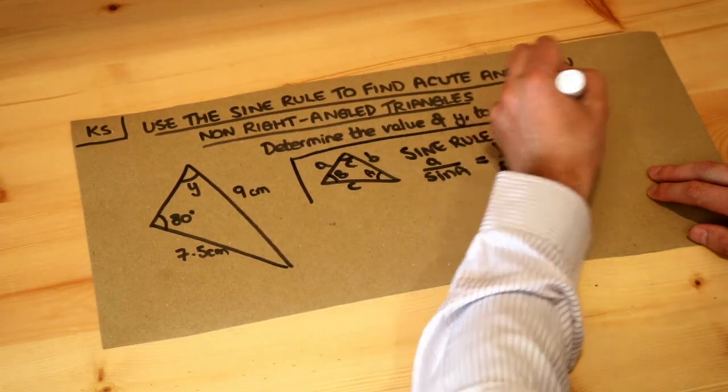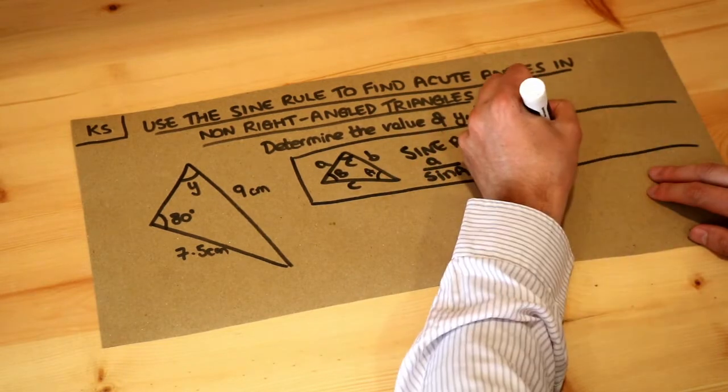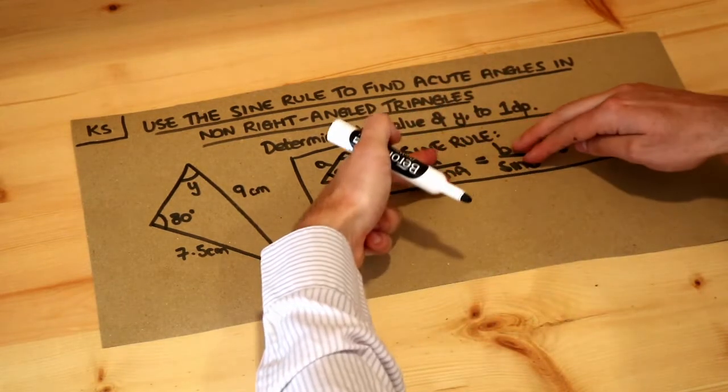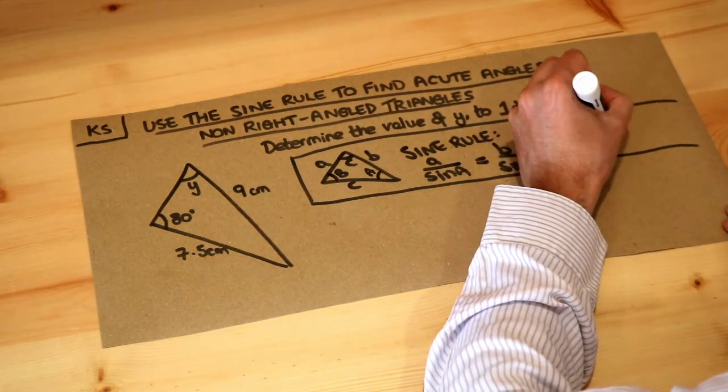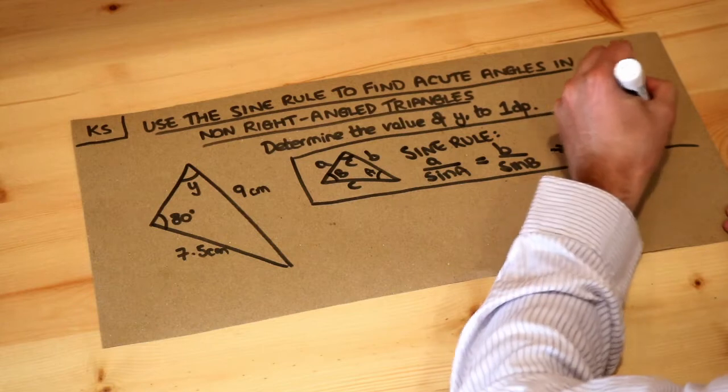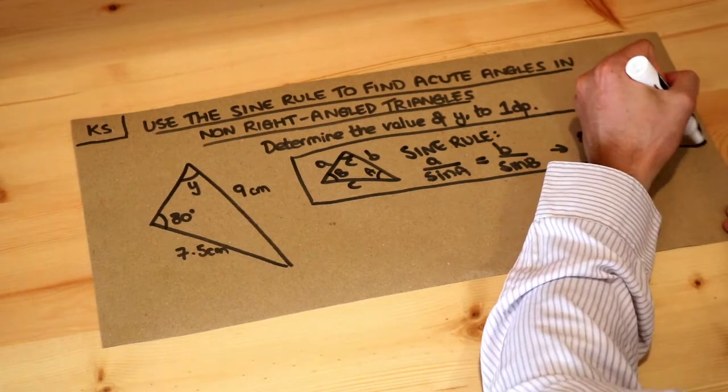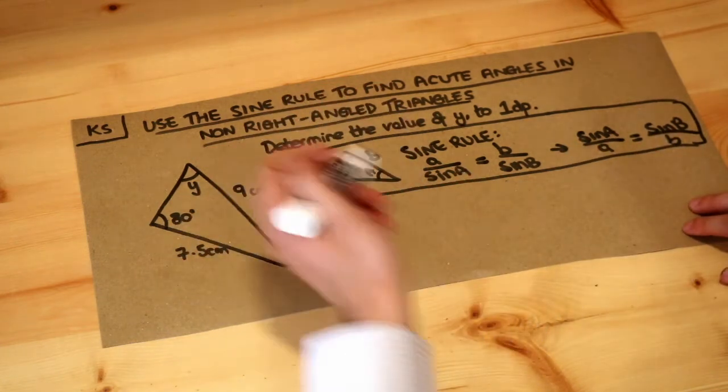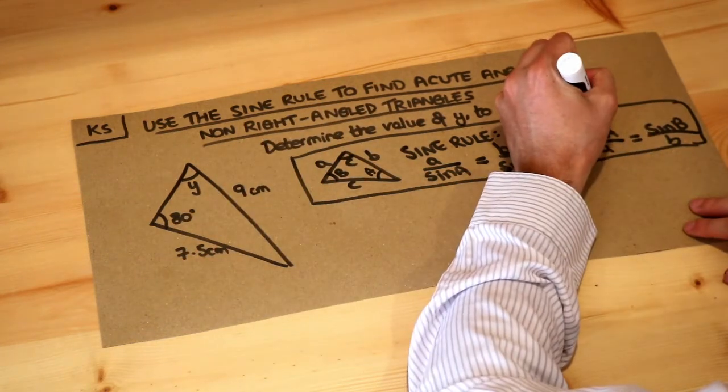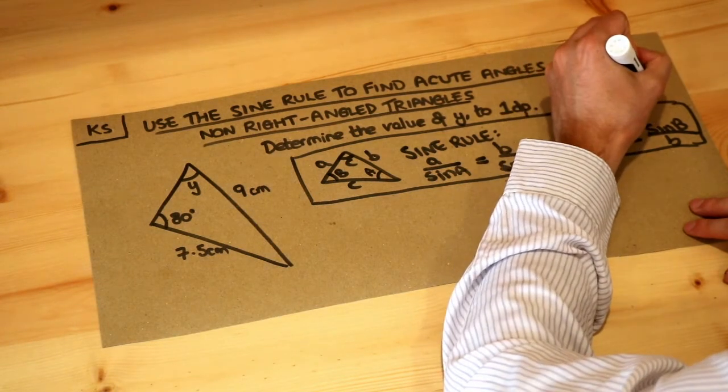Now there's actually a variant of the sine rule which is more suitable for angles. So what we could do is we could just reciprocate, flip both sides of the equation, and then we get sine A over a equals sine capital B over B. This variant of the formula is more suitable when we have unknown angles rather than unknown sides.